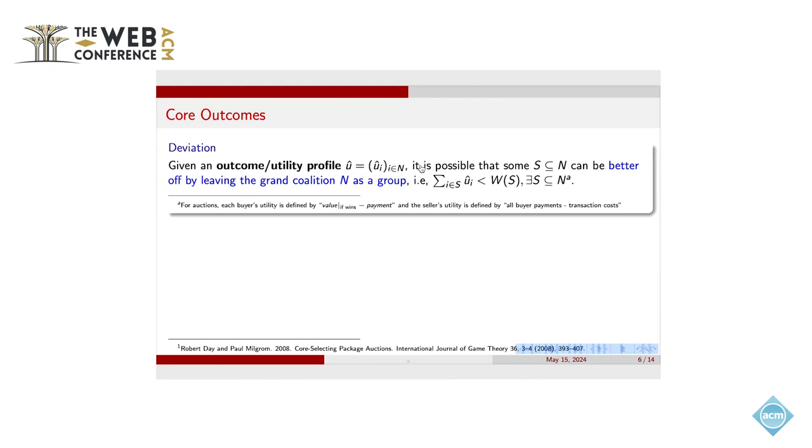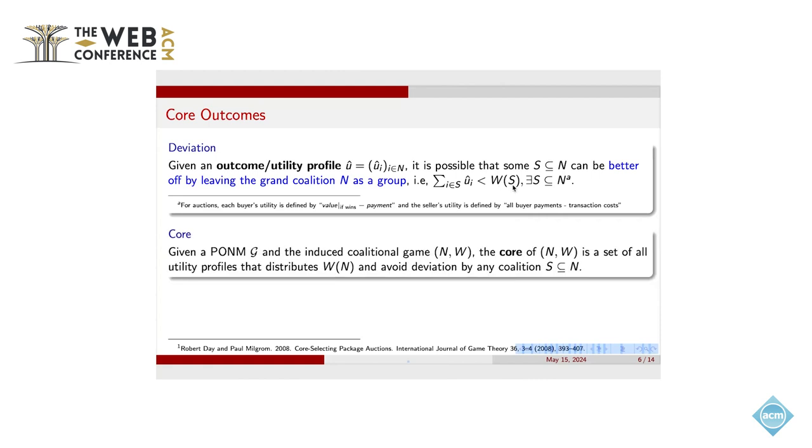Sometimes it is possible that a subset of players in this market are not satisfied with their utilities. So they want to deviate from the grand coalition and form a smaller group by themselves. This is because this smaller group will bring a higher total utility for this subset of players. So if under a good utility outcome, there is no group of agents want to deviate, we see that this utility profile is stable. In coalitional game, the core concept is just the set of all the stable outcomes of the coalitional game.